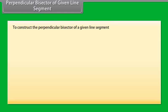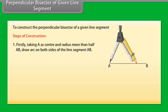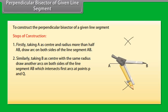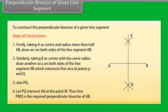Now we will learn to construct the perpendicular bisector of a given line segment. Let us take a line segment AB. We want to construct its perpendicular bisector. Firstly, taking A as center and radius more than half AB, draw arcs on both sides of the line segment AB. Similarly, taking B as center and with the same radius, draw arcs on both sides of AB, which intersect the first arcs at points P and Q. Now join P and Q. Let PQ intersect AB at point M. Then line PMQ is the required perpendicular bisector of AB.